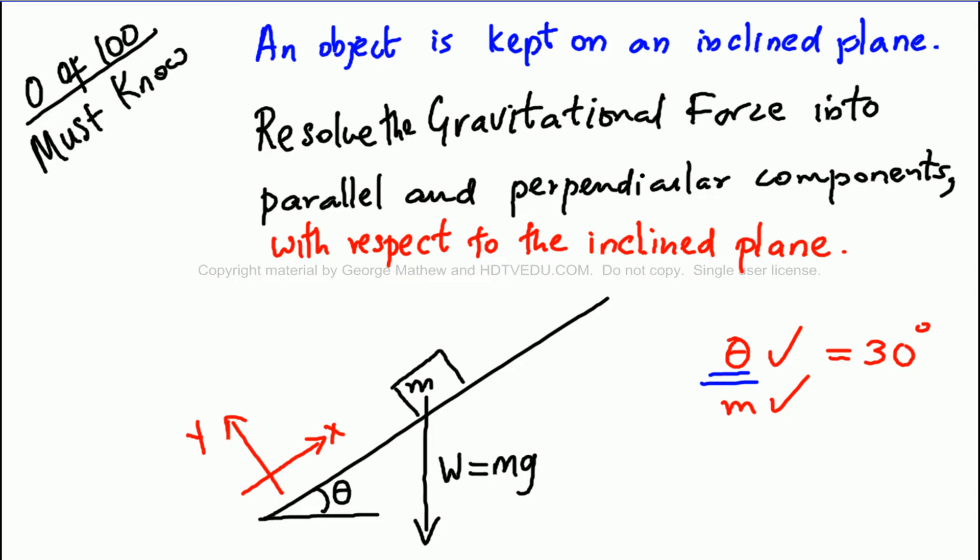You're given an inclined plane and the mass is kept on it. The angle theta is the angle that the inclined plane makes with the horizontal. Let's assume it is 30 degrees and the mass is given. The gravitational force is w equals mass times gravity, and gravitational force always acts vertically down.